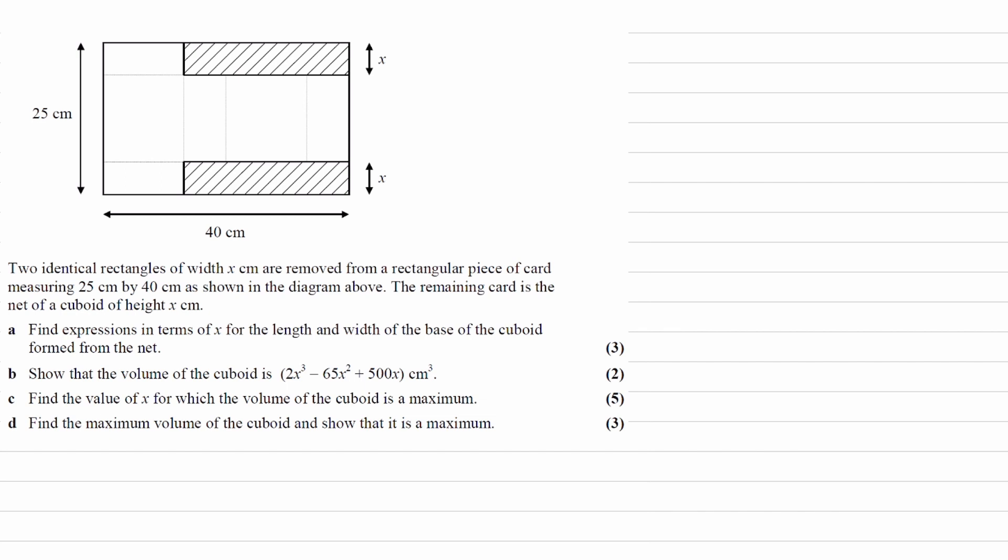That would also mean that this length here is x, because when you fold up those two sides, this one and this one, these two corners will have to meet, so this side must be x. And as this is the fourth side of our shape, this would also have to be x.